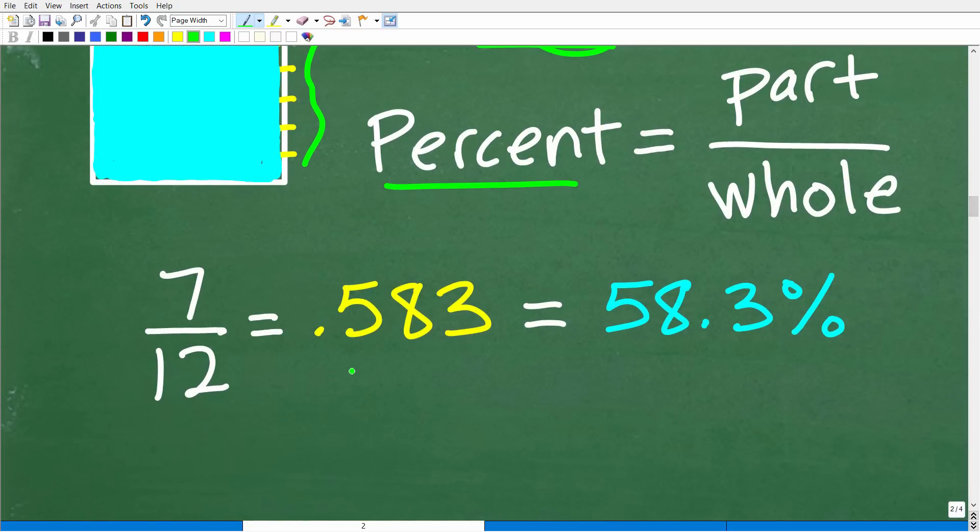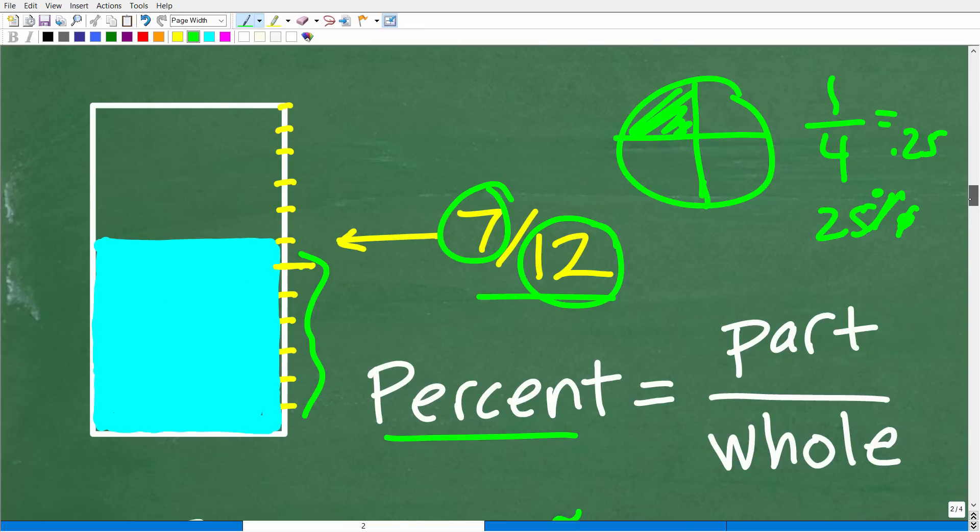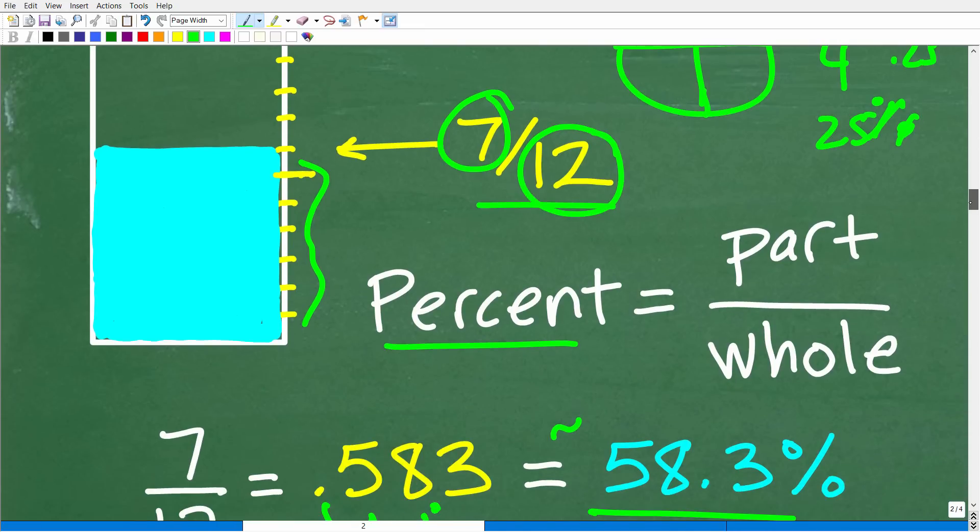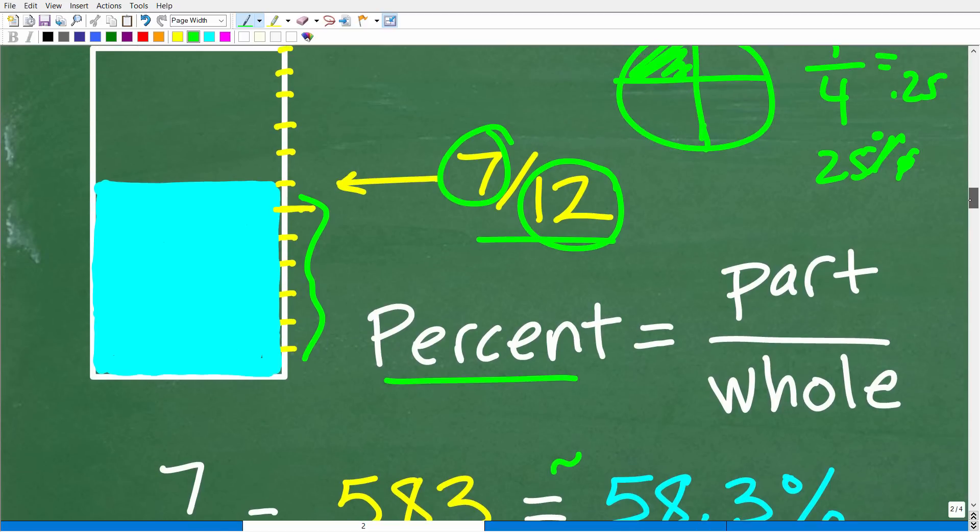So another good way to think about percent is a part out of the whole. And here we have seven parts out of a whole of 12. So we could just simply divide seven by 12. Again, we're talking about basic percent skills here to determine the actual percent of this cup being filled. All right, so let's go ahead and do that right now. So seven divided by 12 in our calculator is approximately 0.583. So we have a decimal, right? So we don't have a percent.